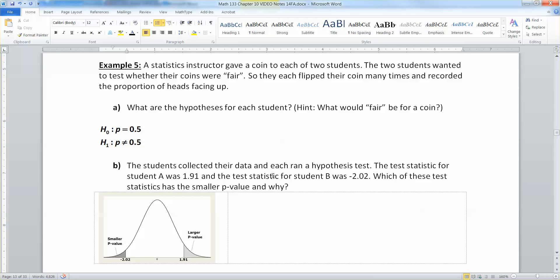Now the students collected their data and each ran a hypothesis test. The test statistics for student A was 1.91 and the test statistic for student B was negative 2.02. Which of these statistics had the smaller p-value and why?